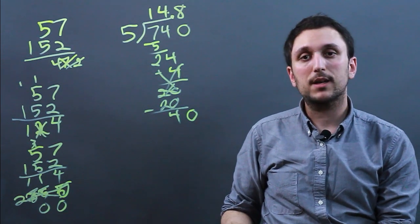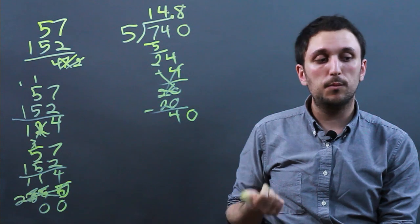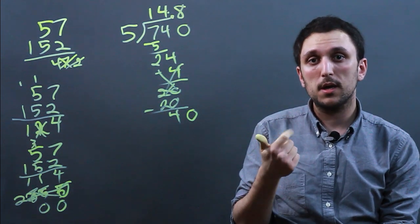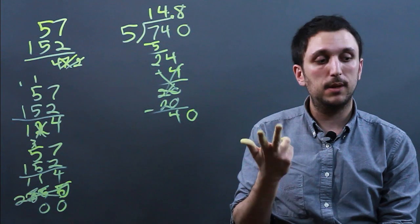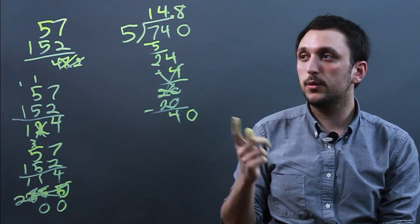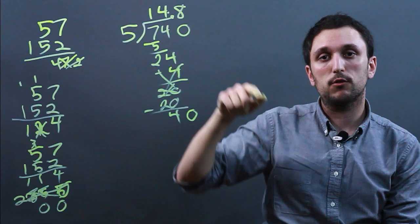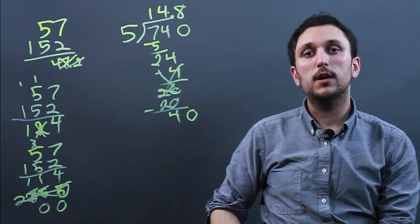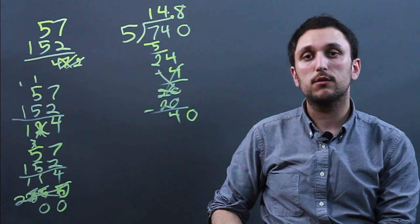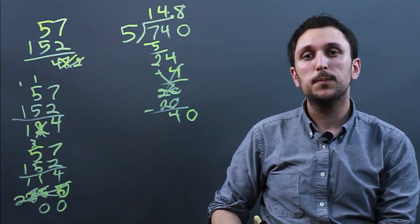So 5 basic errors in multiplication and division. With multiplication, make sure your order is right, make sure you carry properly, and make sure you don't forget the 0s. And with division, make sure you subtract properly, and make sure you don't forget the decimal. So I'm Charlie Kasov, and you just learned 5 basic errors in multiplication and division. Thanks a lot.